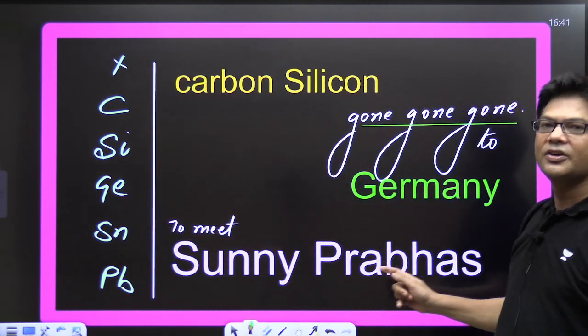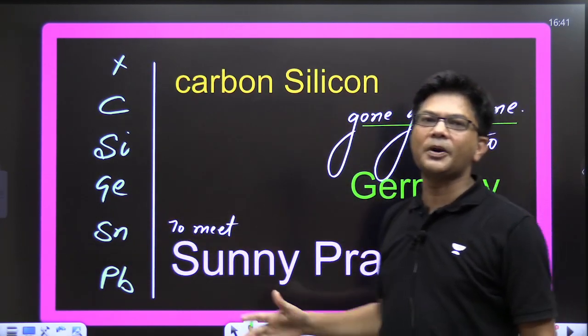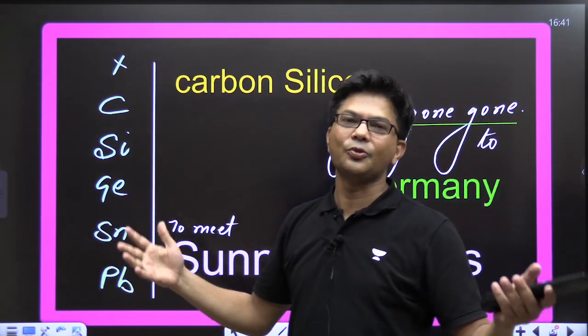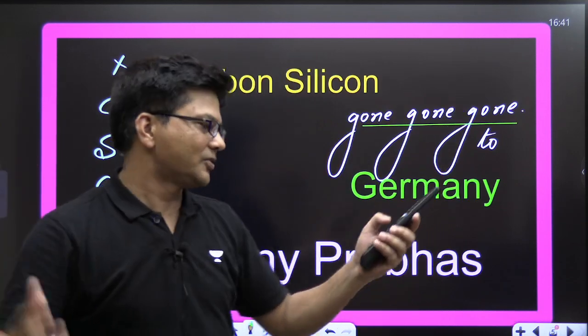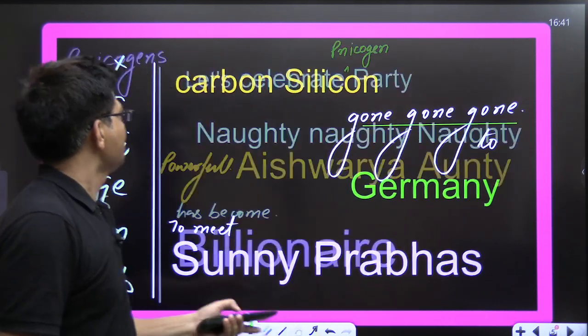Group 14: Carbon, Silicon — going to Germany to meet Sunny Prabhas. So: Carbon, Silicon, Germanium, Tin, Lead — remember the mnemonic 'going to Germany to meet Sunny Prabhas'.